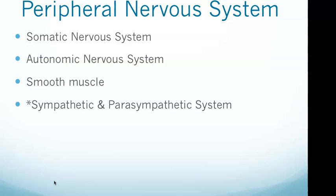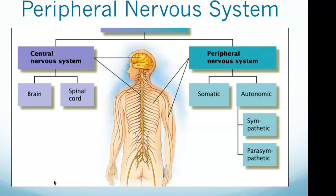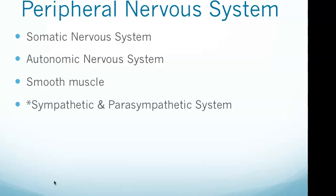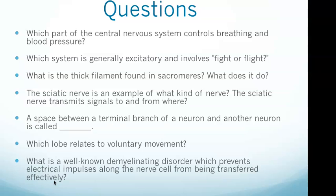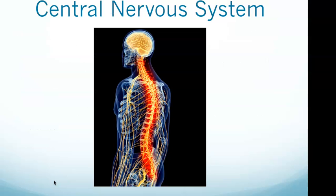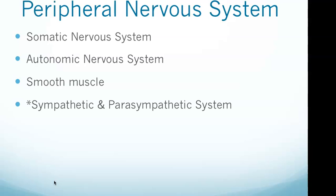The sympathetic system, part of the autonomic nervous system, is generally excitatory and involves fight-or-flight — that was question two. The parasympathetic system is the opposite, having a calming effect such as decreased heart rate. Both the sympathetic and parasympathetic nervous systems are each part of the autonomic nervous system, which controls involuntary muscles.